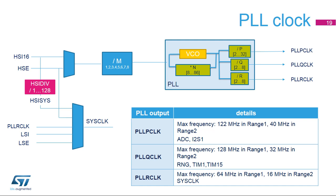STM32G0 devices embed a phase-locked loop with three independent outputs. The input clock of the PLL can be selected between HSI-16 and HSE. PLLQ clock can be used to clock the RNG and timers TIM1 and TIM15. PLLP clock can be used to clock I2S1 and ADC. PLLR clock can be selected as the system clock, which is the root clock for AHB and APB clock domains. Note that PLLQ clock and PLLP clock maximum frequencies are larger than the maximum SysClock frequency. Range 1 and Range 2 are two different power ranges that can be programmed in the main regulator to optimize consumption depending on the system maximum operating frequency.